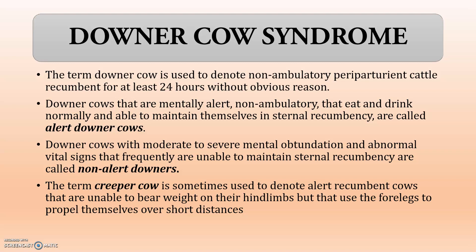Alert Downers are mainly downers that are mentally alert and non-ambulatory, but that can eat and drink, and that can urinate and defecate normally. So, those able to maintain their normal health status while in recumbency are called Alert Downers.